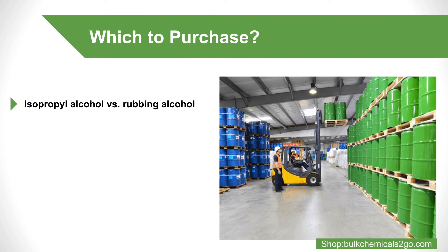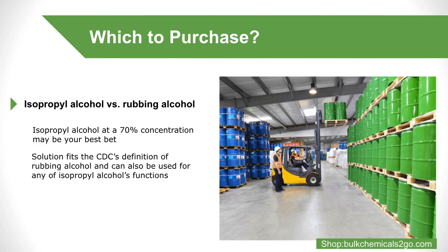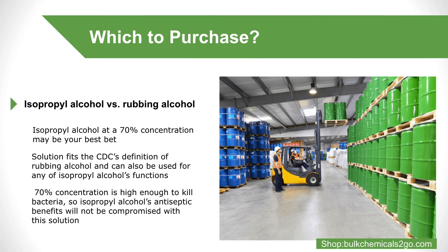If you are comparing isopropyl alcohol versus rubbing alcohol and trying to decide which to buy, isopropyl alcohol at 70% concentration may be your best bet. This solution fits the CDC's definition of rubbing alcohol and can be used for any of isopropyl alcohol's functions. Additionally, the 70% concentration is high enough to kill bacteria, so isopropyl alcohol's antiseptic benefits will not be compromised. Therefore, it will get you the most bang for your buck.